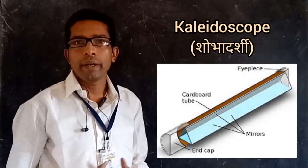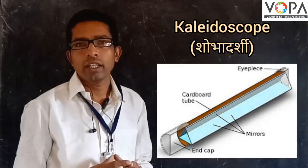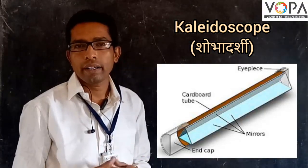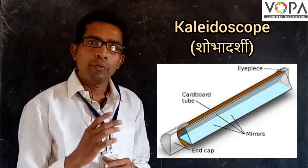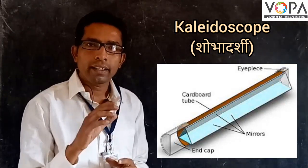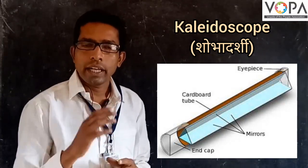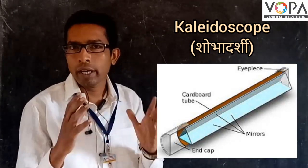Today we will learn about Kaleidoscope. Kaleidoscope uses three rectangular mirrors and different glass particles. We observe that in a Kaleidoscope, enumerable images are formed.